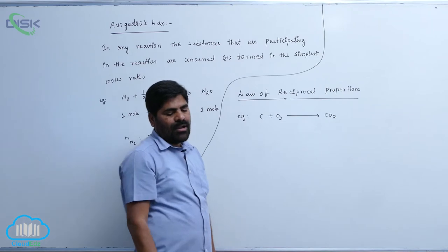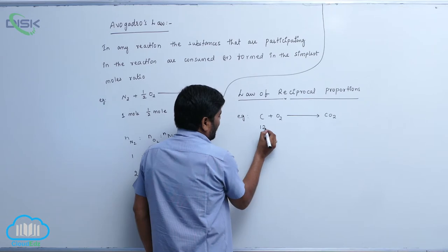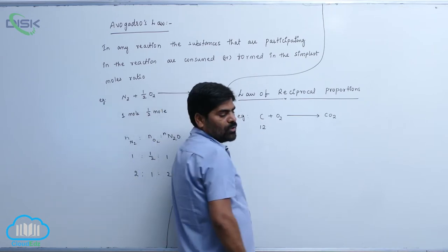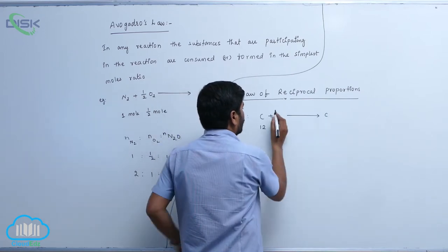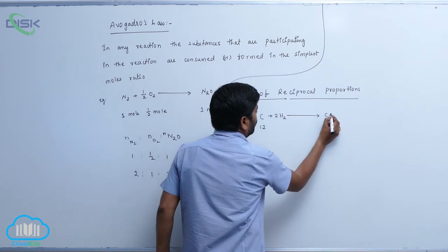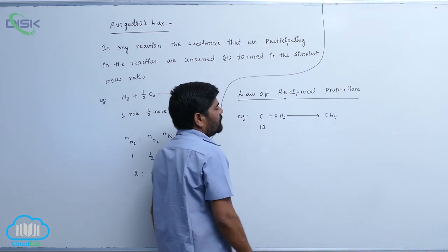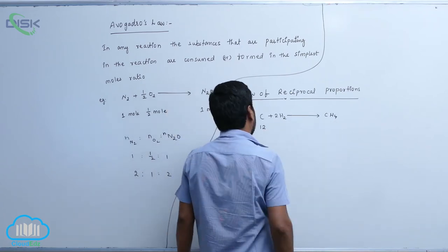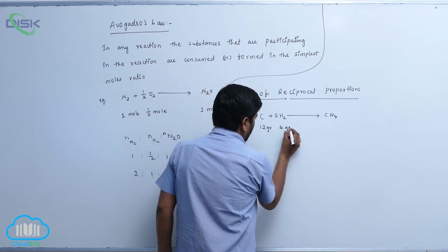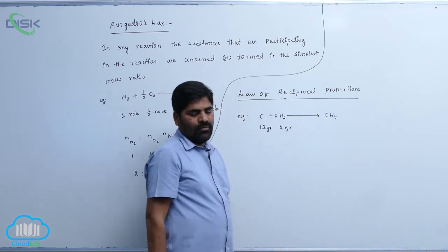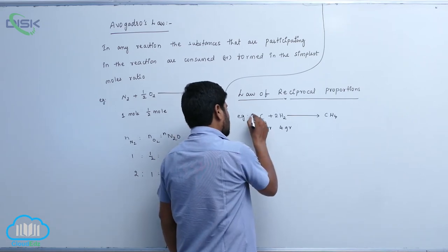In this, how many grams of carbon? 12 grams of carbon. When carbon reacts with hydrogen to form a hydrocarbon — methane — carbon here is 12 grams and 4 grams of hydrogen is involved. This is the first reaction.